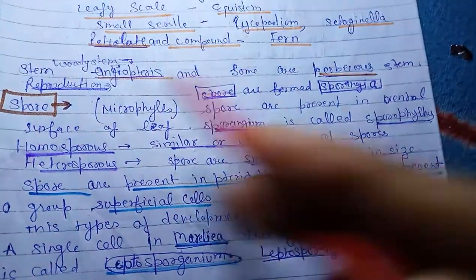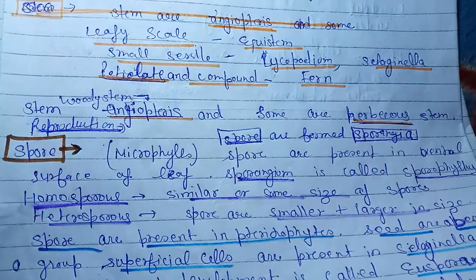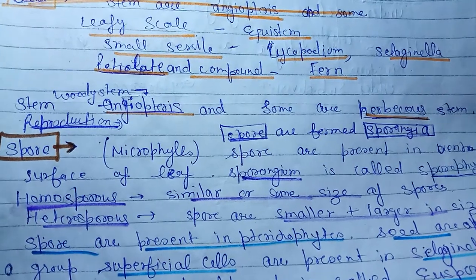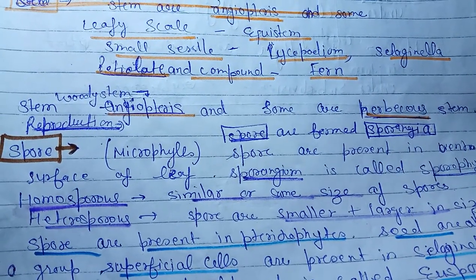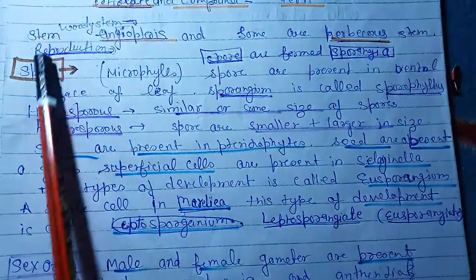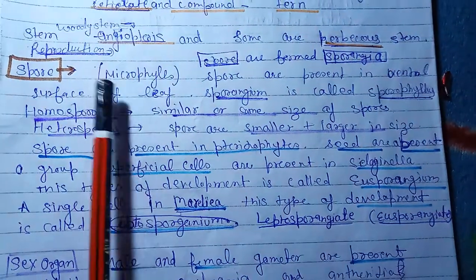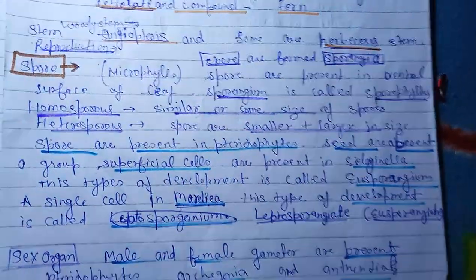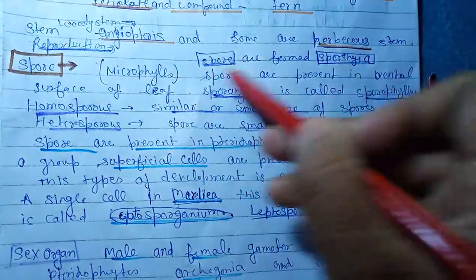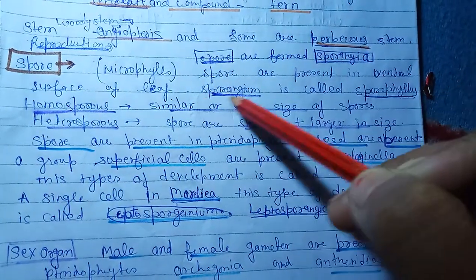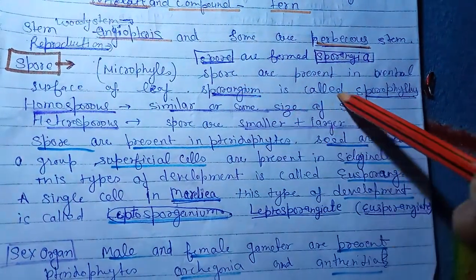Stem are woody in nature in angiosperms. Stems of some are woody and some are herbaceous. Stems present in pteridophytes group. Now talk about the spores of pteridophytes. Microphylls - spores are present on the ventral surface of the leaf.